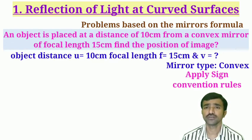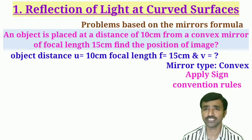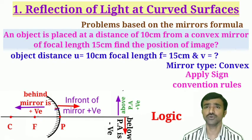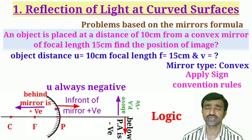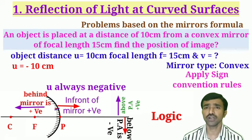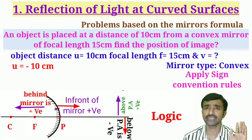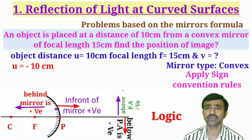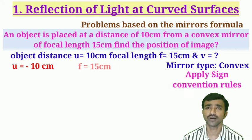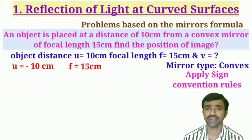When the type of mirror is mentioned in the question, we need to apply sign convention rules for the given parameters. Object distance is negative for any mirror, so u = −10 cm. The focal length of a convex mirror is located behind the mirror, so it is taken as positive: f = +15 cm.